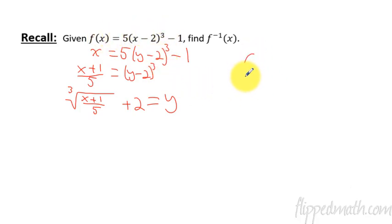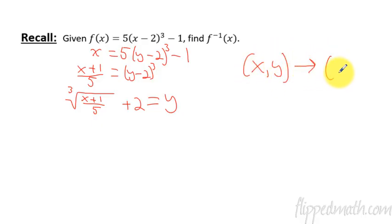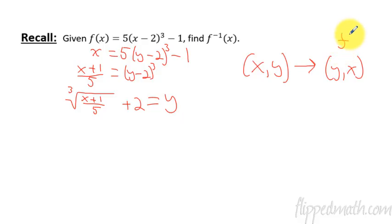So again, the way we do that is we take an (x, y) coordinate point and swap the x and y — you change them — and then this here would be the inverse if this is the regular function. Okay, just a quick review on that.